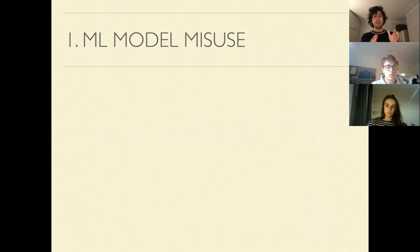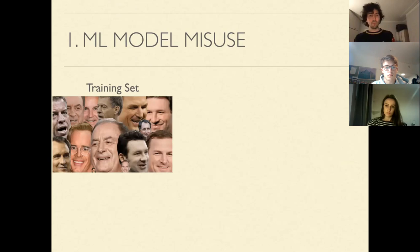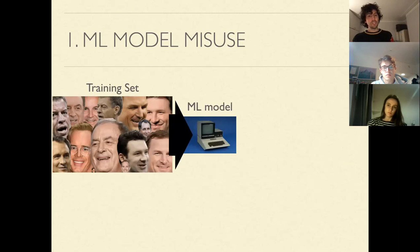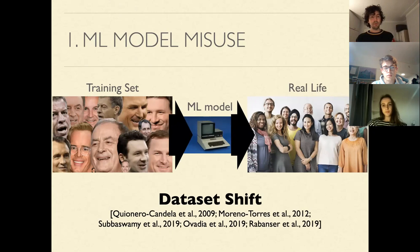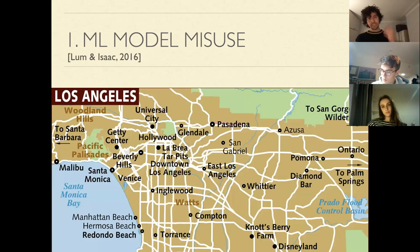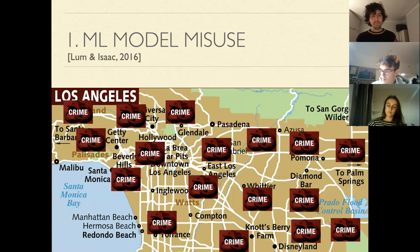I'd like to divide the sources of bias into two categories. The first is what I see as machine learning model misuse. One example: you have a training set and use it to train your machine learning model, then apply it in real life — but the real-world data looks different from your training data. This is a problem of dataset shift. There are ways to address this, such as collecting more representative data, or leveraging expert knowledge about domains where you don't have sufficient data.